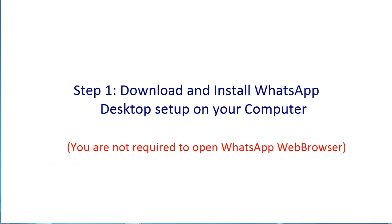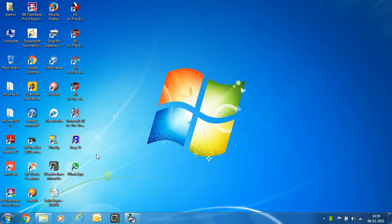For Step 1, download and install WhatsApp desktop setup on the computer where the Busy application is installed. Some users confuse this with WhatsApp web browser — that is not required. You only need to install the WhatsApp desktop setup. The prerequisite is that your computer must have a 64-bit operating system with Windows 8 or above.